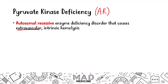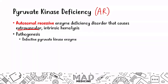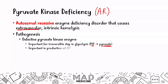Extravascular means it is not going to be in the blood vessels specifically. In this disease, you have a defective pyruvate kinase enzyme. This enzyme is very important because it allows a very important irreversible step in glycolysis: the conversion of PEP into pyruvate. And that is important because it is needed for the production of ATP.